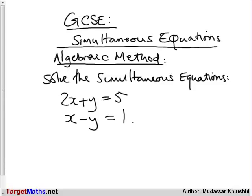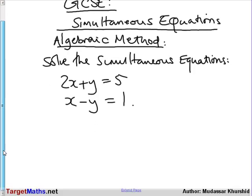When solving simultaneous equations, the first thing you should do is label the two equations: the first equation with the number 1, and the second equation with 2, remembering to circle the numbers. The algebraic method is to try and eliminate one of the variables, and the way we eliminate it depends on what we have in each equation.